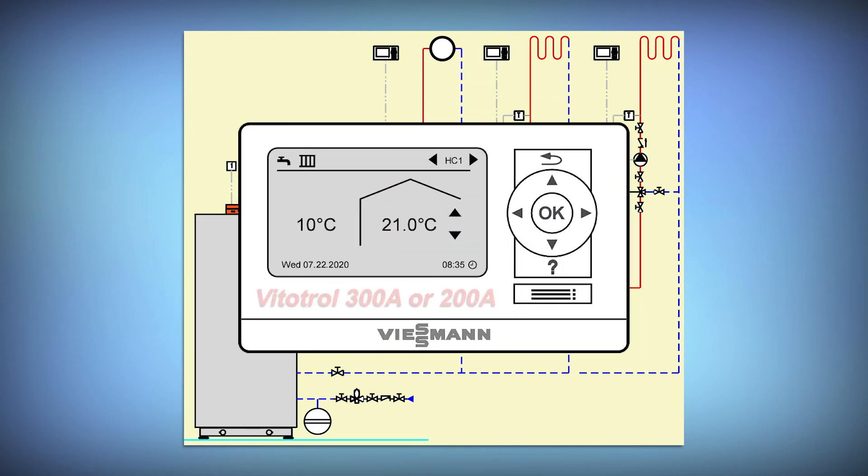The Vitatrol 300A or 200A are room sensing devices that communicate with the boiler in real time and as the room approaches set point they don't turn the boiler on and off but tell the boiler to make adjustments to the way it operates.